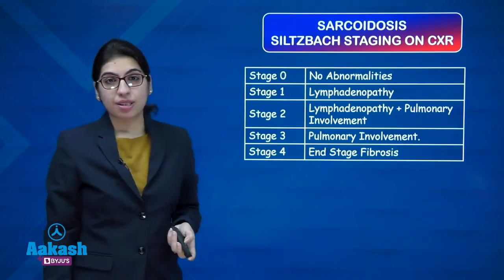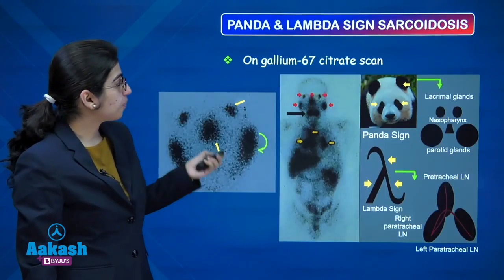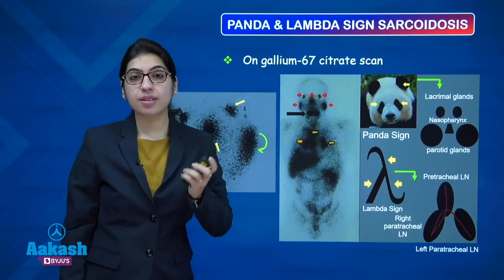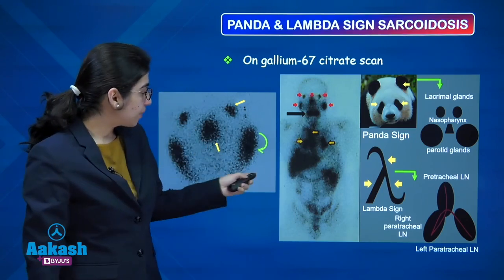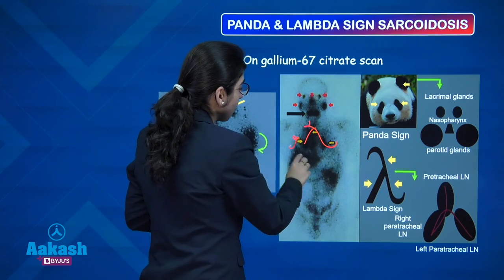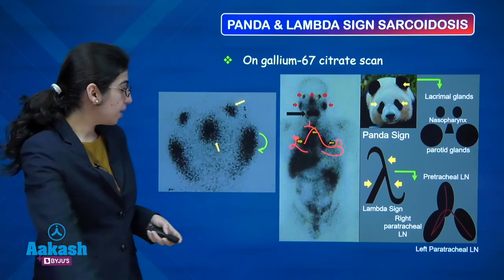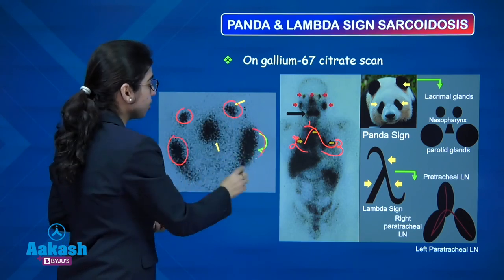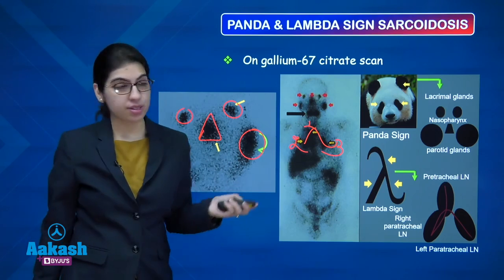On gallium-67 citrate scan, sarcoidosis shows two signs: the lambda sign, which corresponds to the 1-2-3 sign on chest X-ray, and the panda sign — uptake in bilateral lacrimal glands, bilateral parotid glands, and nasopharynx.